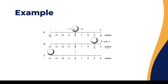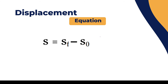Now, from the initial position, the golf ball moves to the left four units. We can say the golf ball moved four units to the left, or in mathematical terms, the displacement of the golf ball is minus four meters, written as -4 m.